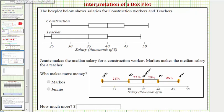So looking at our question, we're told that Jenny makes the median salary for a construction worker. So looking at the construction worker box plot, notice how Jenny would make this amount of money here per year, which we can see would be forty thousand dollars per year.